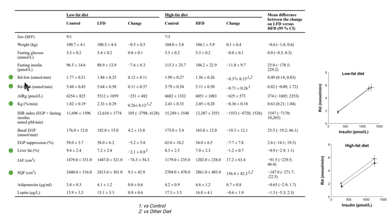RD is glucose disposal — measuring at a low insulin concentration how much blood sugar is removed from the bloodstream into the tissues. That's what RD low implies. For the low fat diet, the lines are overlapping, so there's no shift, no change. Looking at the numbers — 1.77 compared to 1.84 — sure, you can see a difference, but statistically speaking there's no change. If a number has a superscript "1" attributed to it, that means there is a statistical difference versus the control. There's no such marker for the low fat diet, so there's no statistical difference there.